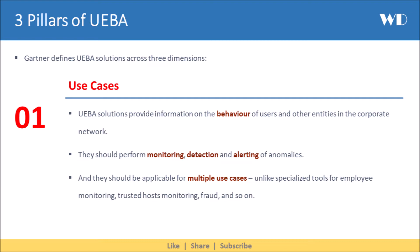UEBIA solutions provide information on the behavior of users and other entities in the corporate network. They should perform monitoring, detection, and alerting of anomalies. And they should be applicable for multiple use cases, unlike specialized tools for employee monitoring, trusted hosts monitoring, fraud, and so on.